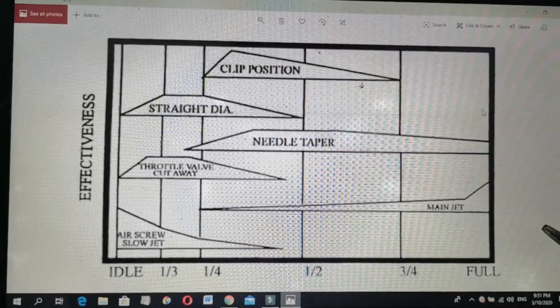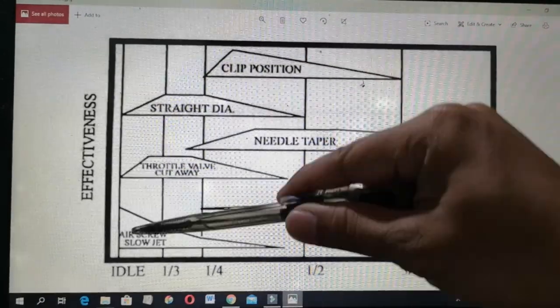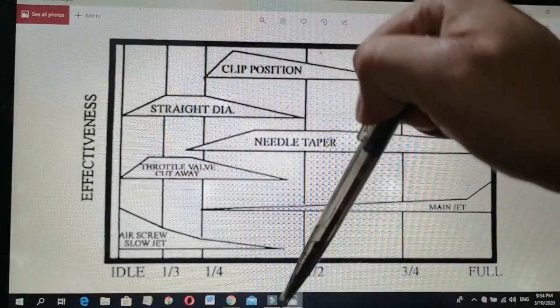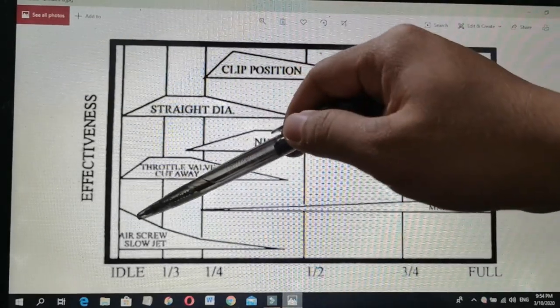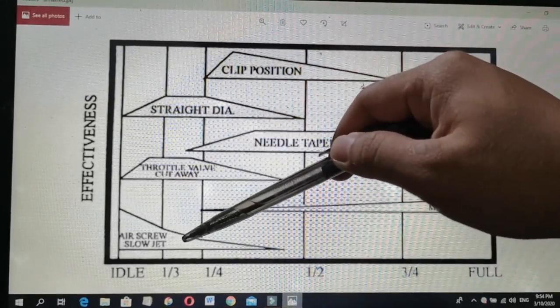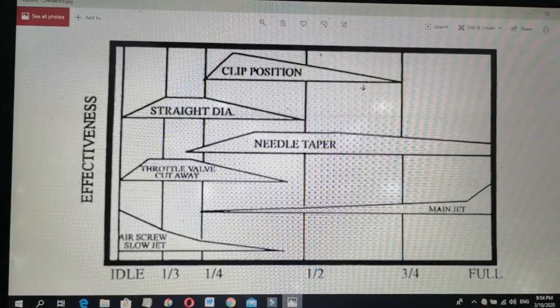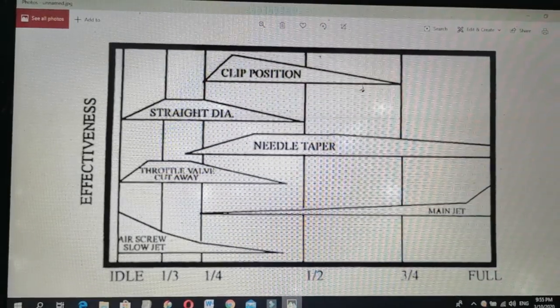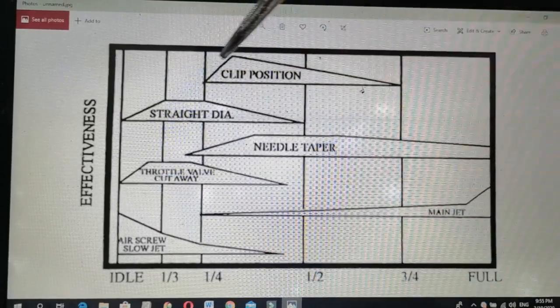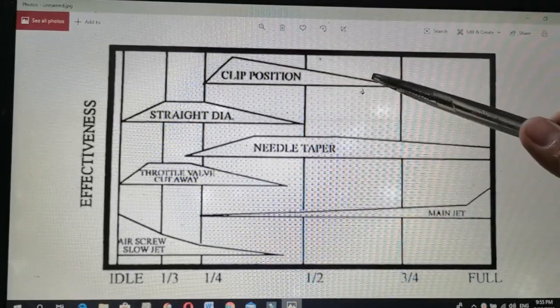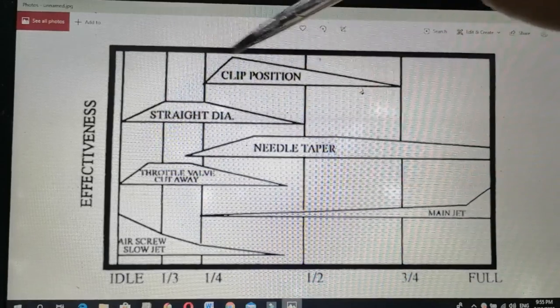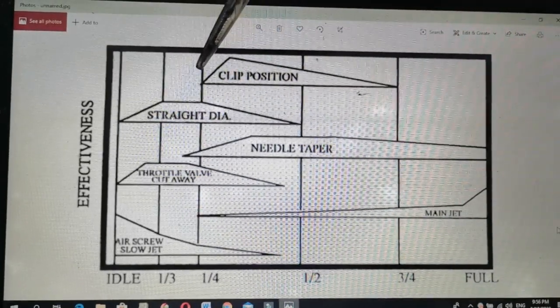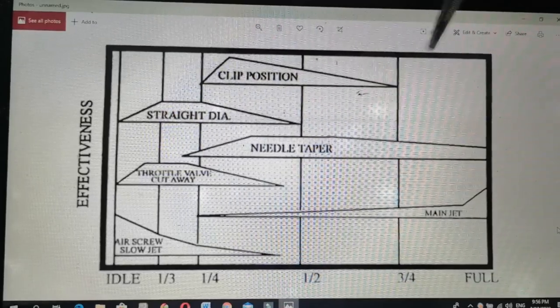Ang pilot jet o slow jet, makikita nyo na pinakamataas na epekto niya is nasa idle. Habang tumataas ang pihit mo, papuntang 1/4 is pababa din ang epekto. So, pagdating naman ng 1/4 throttle hanggang 3/4, ang jet needle naman ang gumagana. Jet needle. Ito. Jet needle clip position. Ito. Ang jet needle naman ay gumagana simula 1/4 hanggang 3/4 throttle response.